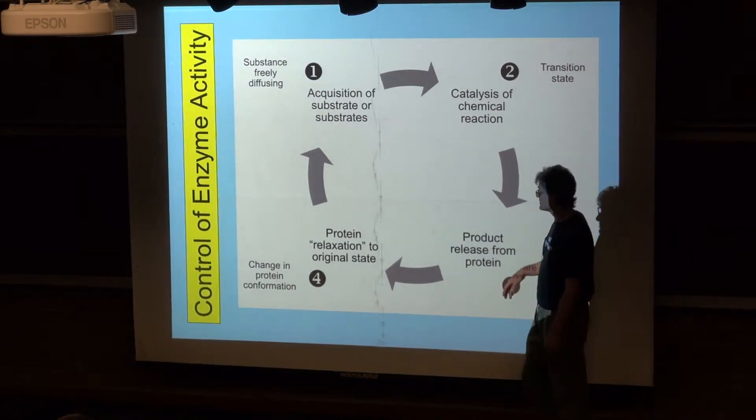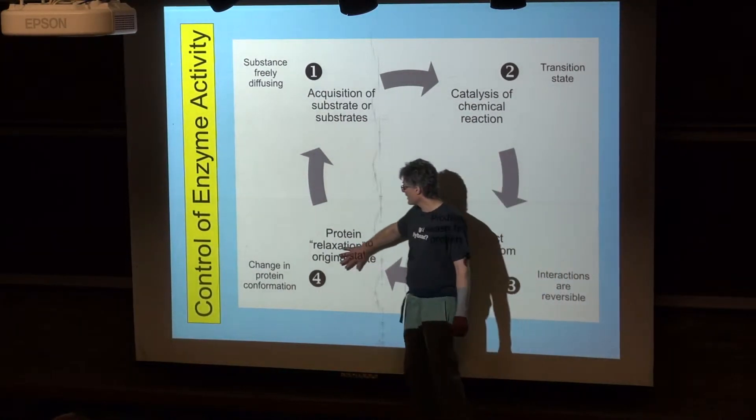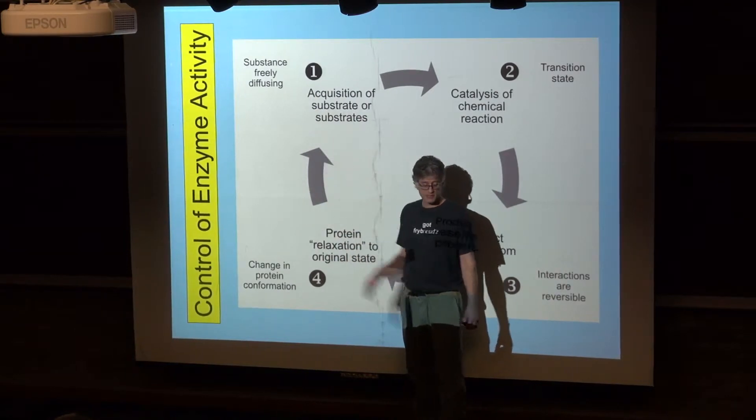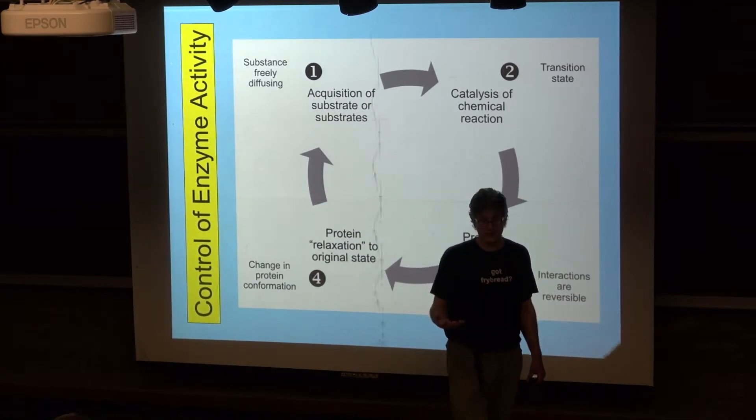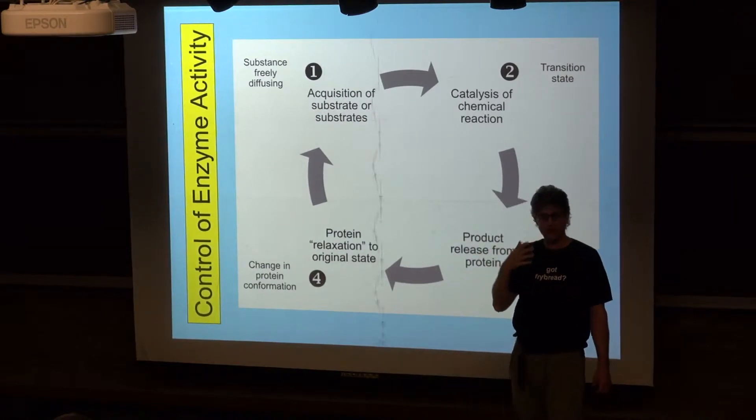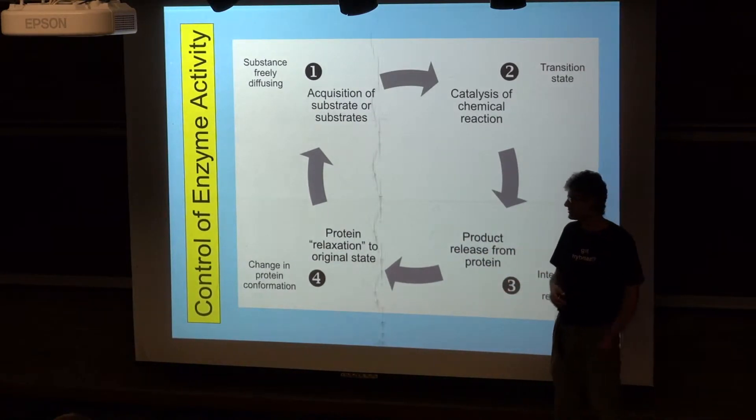Products are released, they diffuse away, and without the products, the enzyme is able to relax its shape back to what it originally looked like, where it's available for more binding to substrate or substrates.